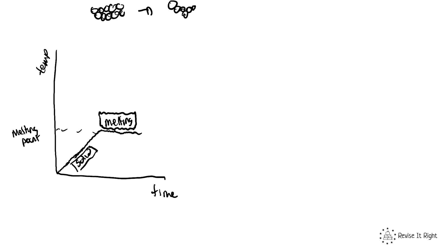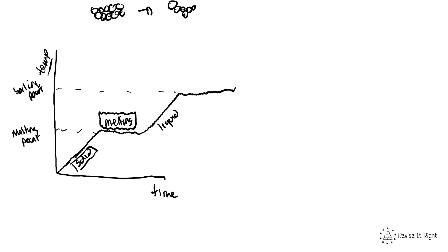When all the particles have melted, the temperature will then start to rise again — at this point it's now a liquid. When that reaches its boiling point, the substance will start to change state into a gas. But again, our increasing energy is not going to raise the temperature — it goes to breaking the bonds, so the line plateaus again. The temperature is not increasing because the energy is going into breaking the bonds. This plateau represents boiling. When all those bonds have broken, the temperature will start to increase again, and at this point it will be a gas.